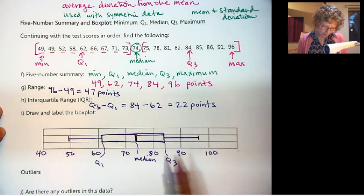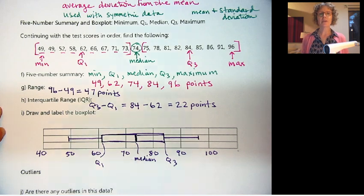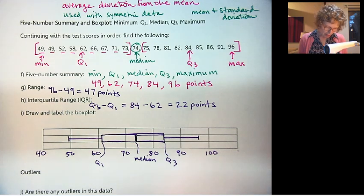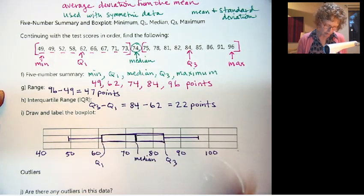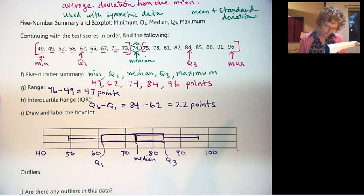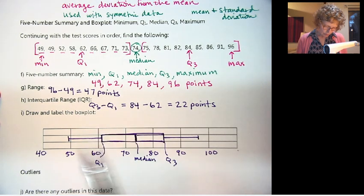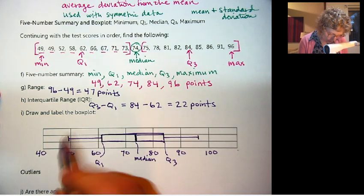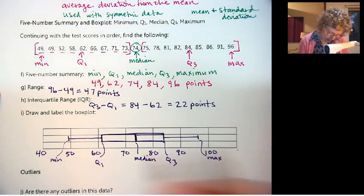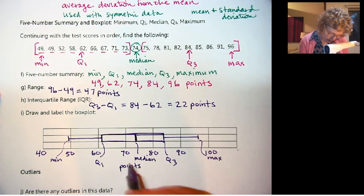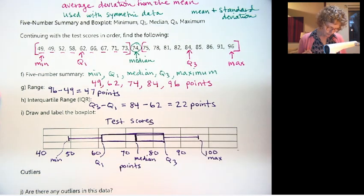There we have our box plot. You can use box plots often to see if the data is symmetric or skewed. This one actually looks fairly symmetric, but we know that our data was a little skewed. That's when you want to compare your mean and your median. They were kind of close to each other, 74 and I think 72 something, so fairly close to each other. Let's label these min, max, and these are test scores.